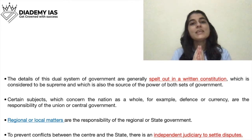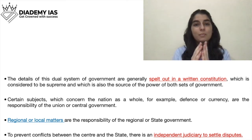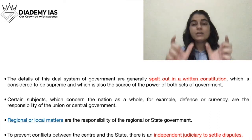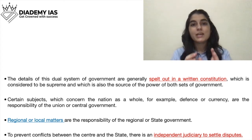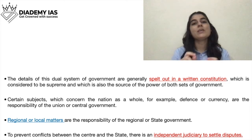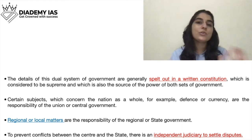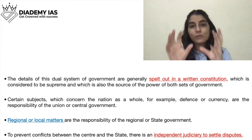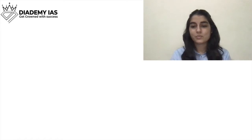These three lists - Union, State, and Concurrent - along with their subjects are mentioned on page 159 of the NCERT 'Indian Constitution at Work'. Please read those lists because sometimes you get a direct question asking which matters are mentioned in the Union List or State List. Refer to that page and try to remember which subjects fall under which list.